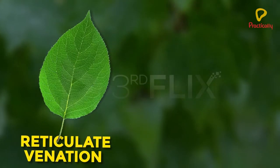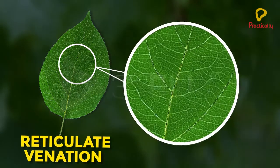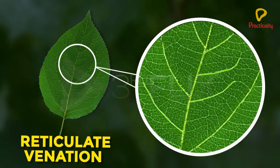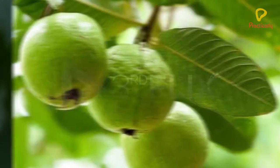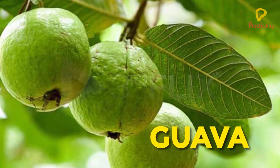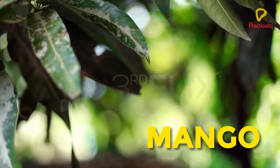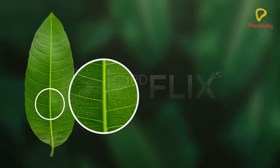When the veins form a net-like shape on either side of the midrib, it is called reticulate venation. This type of venation is seen in dicots such as guava and mango.